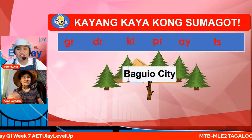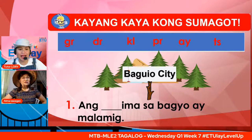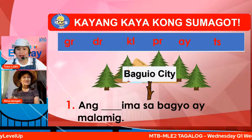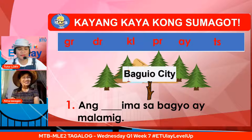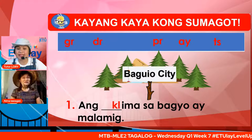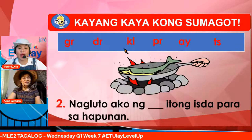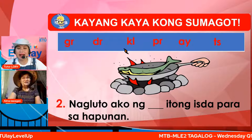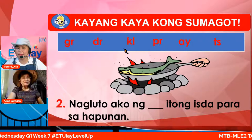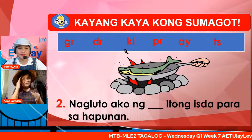Bilang isa — ang patlang na ima sa Baguio ay malamig. Grima, Drima, Klima, Prima, o Chima? Kung ang sagot mo ay KL, kambal katinig na KL para sa salitang klima, tama. Para sa pangalawa — nagluto ako ng patlang na isda para sa hapunan. Ano ang kambal katinig na angkop? Kung ang sagot mo ay PR para sa prito, napakahusay.